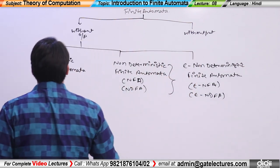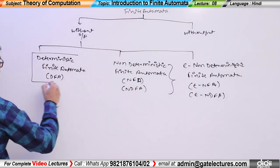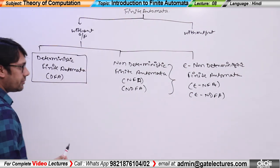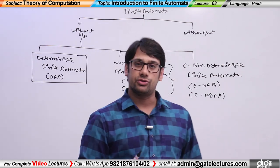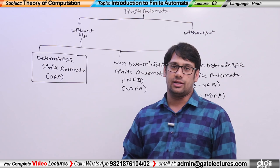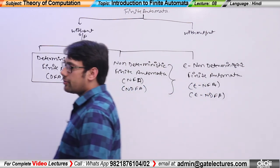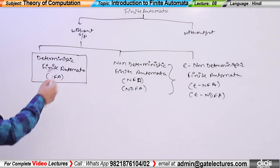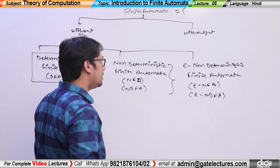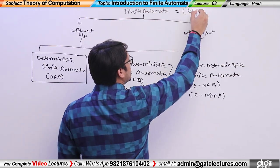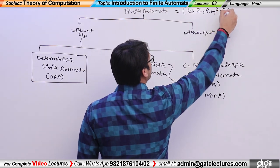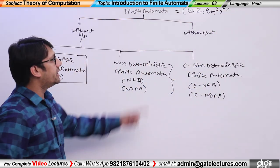Now we start with the first topic: Deterministic Finite Automata. What is a Deterministic Finite Automata? It is a formal definition. We will formally define and represent everything. A finite automata is a tuple which is (Q, Σ, Q0, δ, F). This is the finite automata definition.